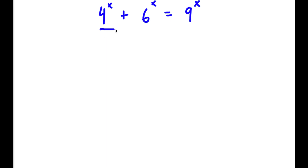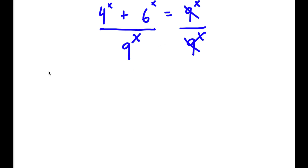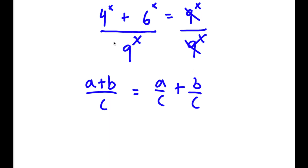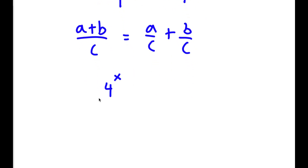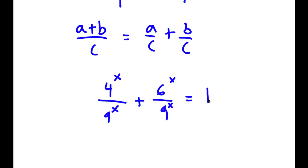What I'm first going to do is start by dividing both sides by 9 to the power of x. By doing that, these two cancel out. Now if I have something in the form (a + b) over c, this is equal to a over c plus b over c. So we have 4 to the power of x plus 6 to the power of x over 9 to the power of x, which equals 4 to the power of x over 9 to the power of x plus 6 to the power of x over 9 to the power of x, and this is equal to 1.